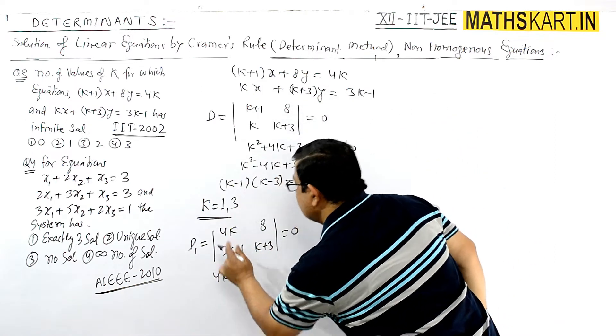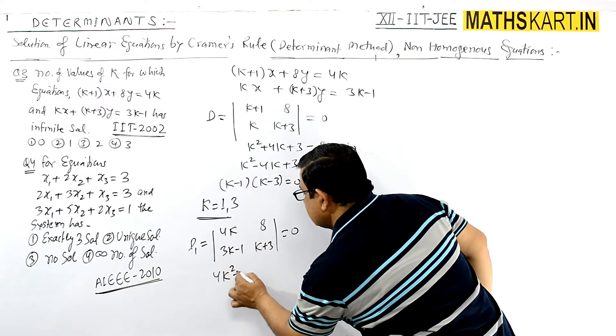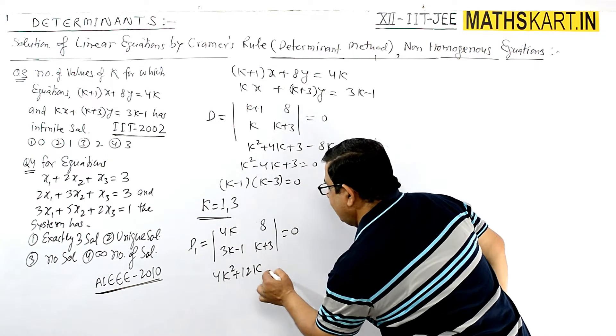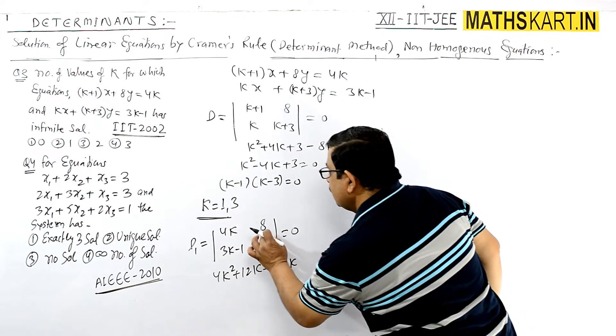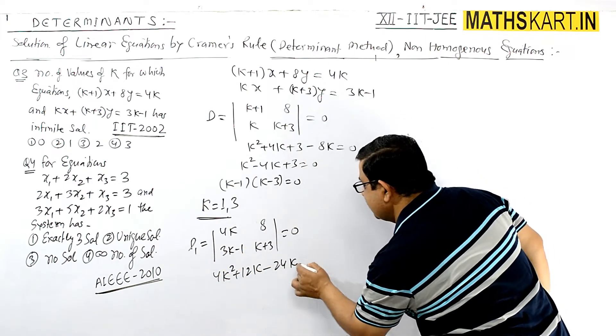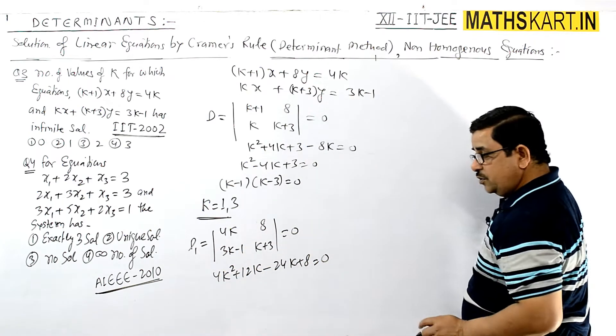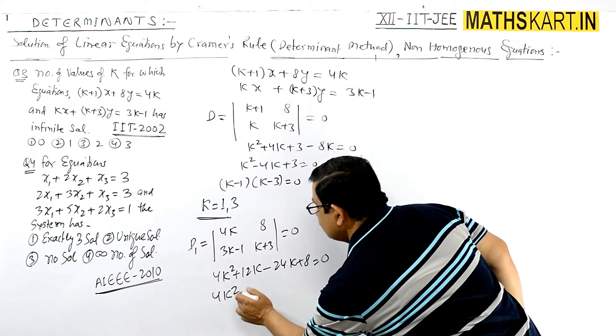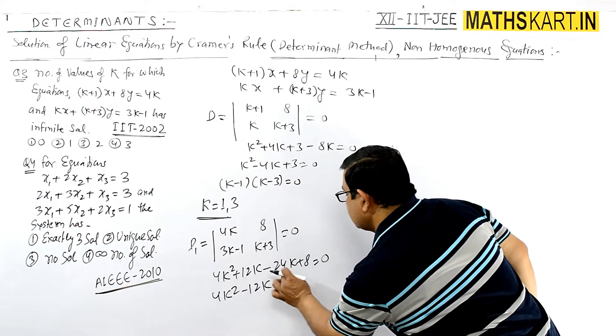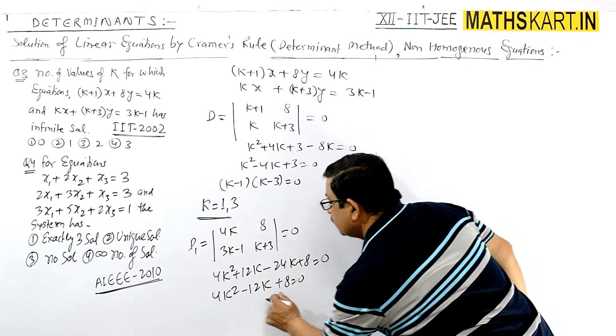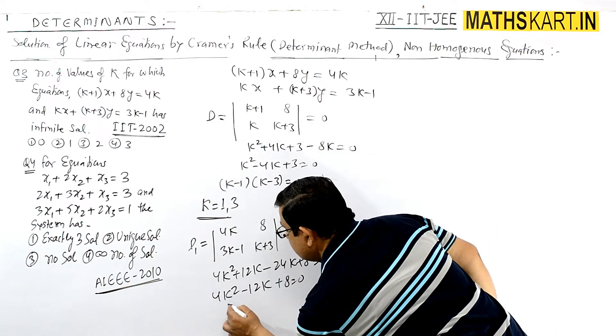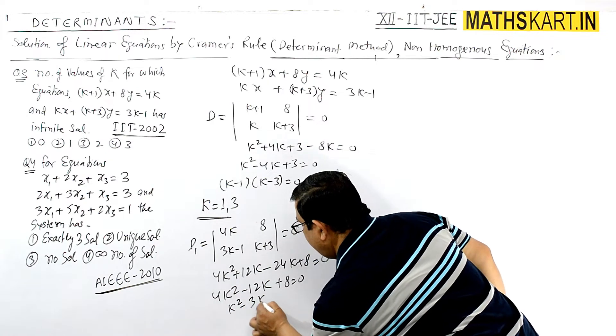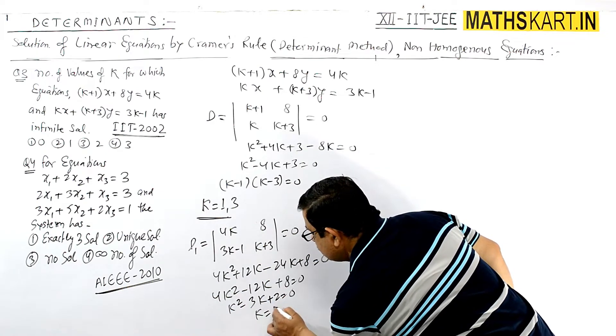Expanding gives 4k(k+3) - 8(3k-1) = 4k² + 12k - 24k + 8 = 0, which simplifies to 4k² - 12k + 8 = 0. Dividing by 4: k² - 3k + 2 = 0.